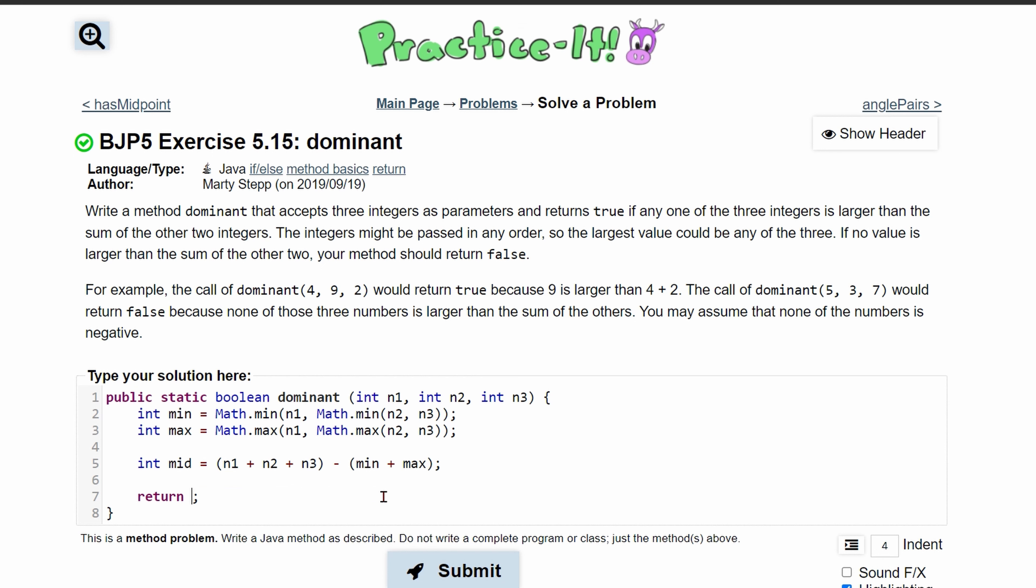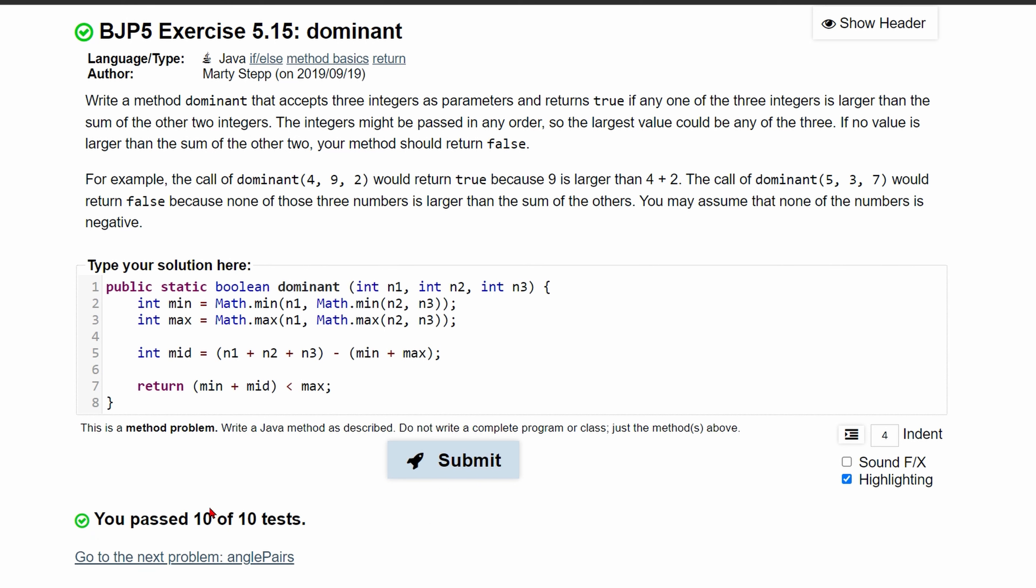Now we need to do our comparison. So what we're basically saying is we need our minimum plus our middle to be less than our max. And if that's the case, we can submit and pass all the tests.